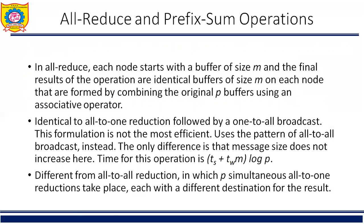In all-reduce, each node starts with a buffer of size M and the final results are identical buffers of size M on each node, formed by combining the original P buffers using an associative operator. Although identical to all-to-one reduction followed by one-to-all broadcast semantically, that formulation is not the most efficient. Instead, it uses the pattern of all-to-all broadcast, with the only difference being that message size does not increase. The time for this operation is Ts*log P + Tw*m*log P.